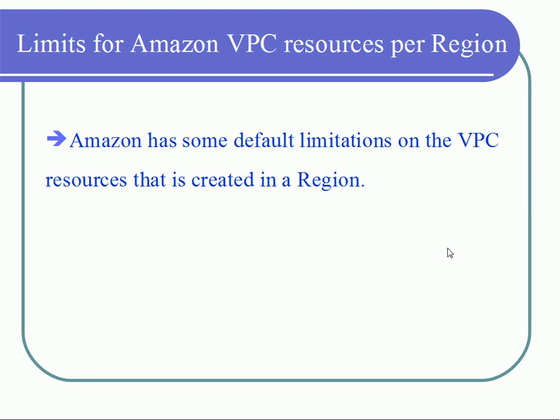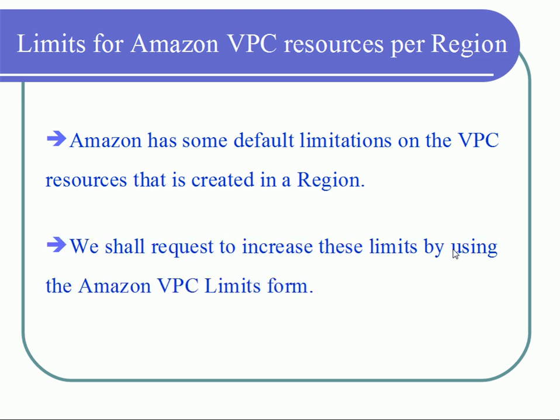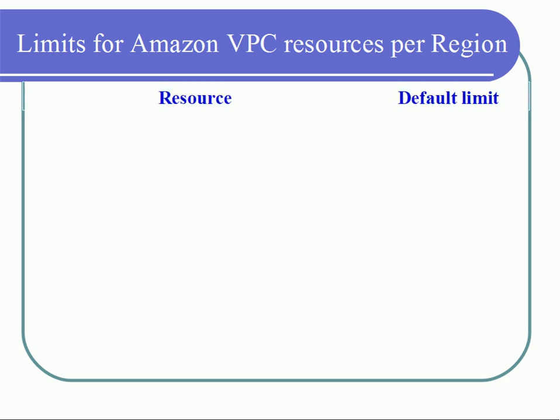While creating your resources in Amazon VPC, there are several limitations per region, per subscription. These limitations can be increased by contacting Amazon through the Amazon VPC limits form, so that the required resources can be increased. We will now see the resources and their default limits.